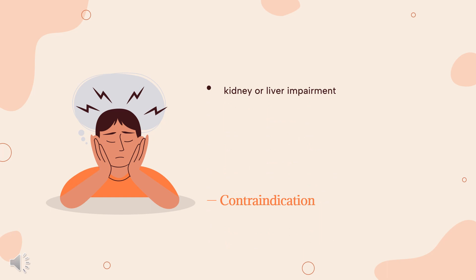Contraindication. Agomelatine is contraindicated in patients with kidney or liver impairment. According to information disclosed by Servier in 2012, guidelines for the follow-up of patients treated with Valdoxan have been modified in concert with the European Medicines Agency. As some patients experience increased levels of liver enzymes in their blood during treatment, doctors have to run laboratory tests to check that the liver is working properly at the initiation of treatment and then periodically during treatment, and subsequently decide whether to pursue the treatment or not.